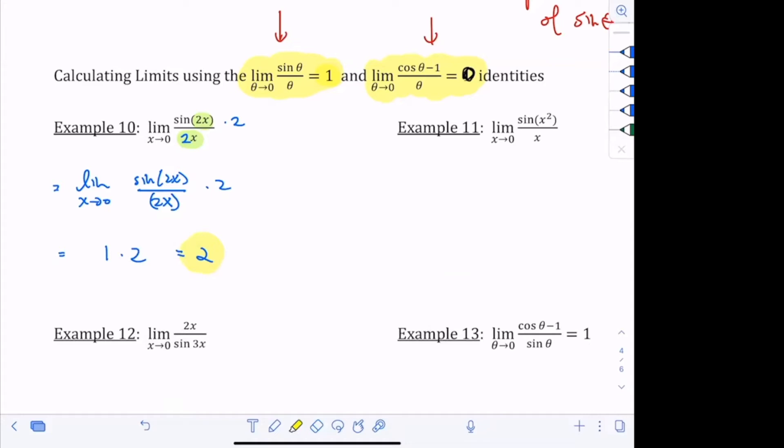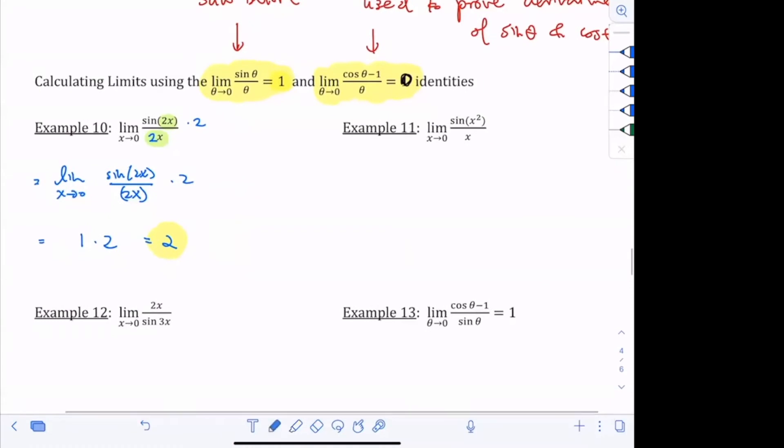The whole goal is to just manipulate the situation so that you can get the trig identity there. So let's look at example 11 next. If I look at example 11, I have the limit as x goes to 0. I have sine of x squared. What would I love for the bottom to be? x squared is right, Joseph. So I can get x squared by multiplying top and bottom by x. I hope you guys could see that. So if I multiply top and bottom by x, then the bottom there is going to be x squared. So this becomes the limit as x goes to 0, sine of x squared divided by x squared times x.